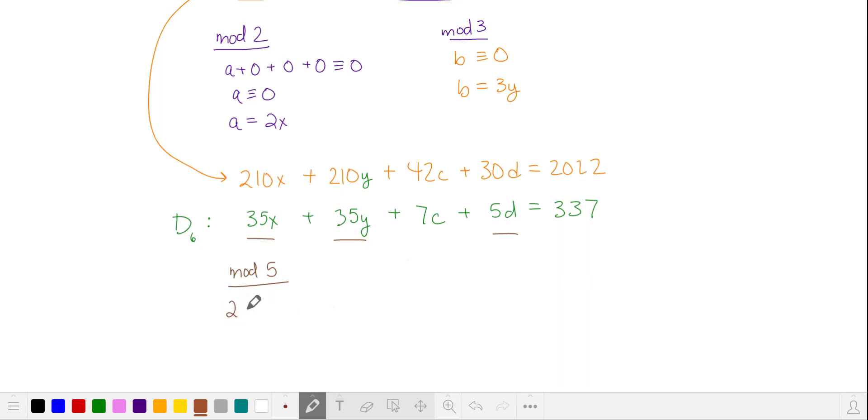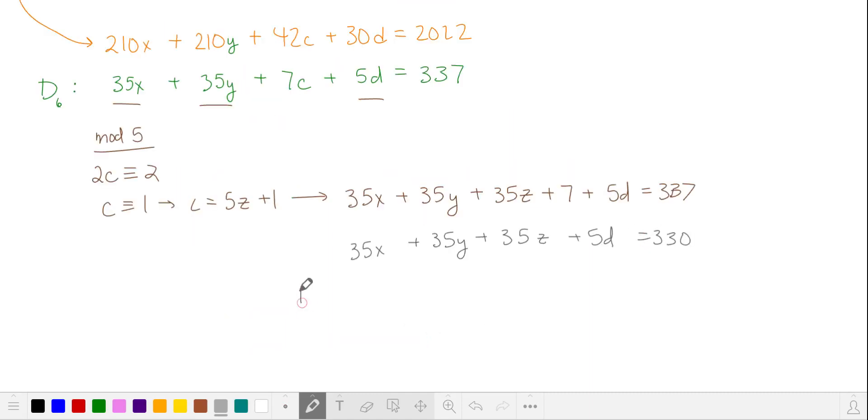7 is 2 more than a multiple of 5, and so is 337. So c is equivalent to 1, and we can replace c with 5 times z plus 1. We'll subtract 7 and divide by 5.